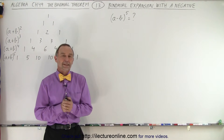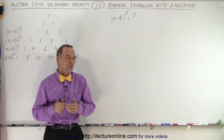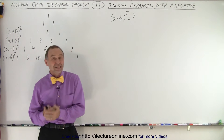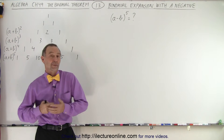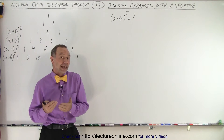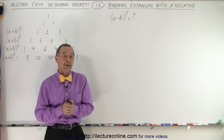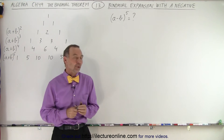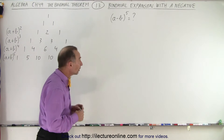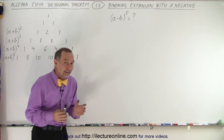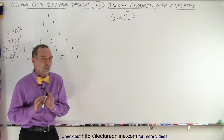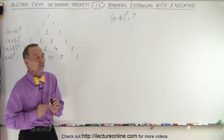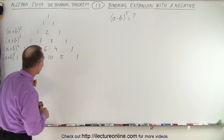Welcome to our lecture online. So what do we do when we have a minus b to some exponent — that is, a negative sign in our binomial? Well, it turns out the procedure looks almost exactly the same with one small difference.